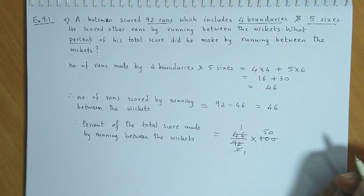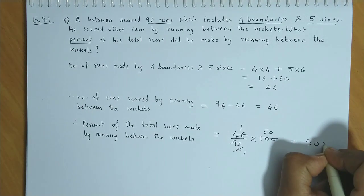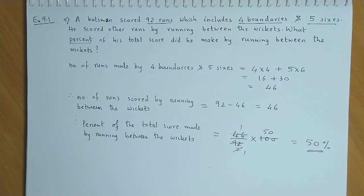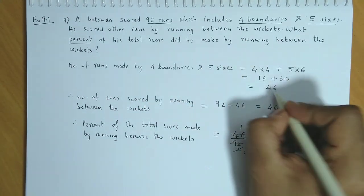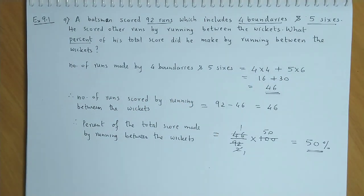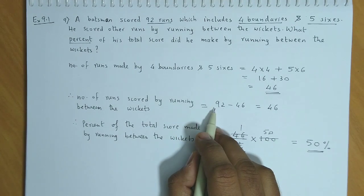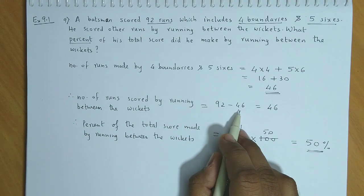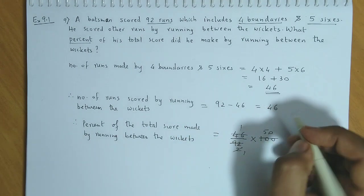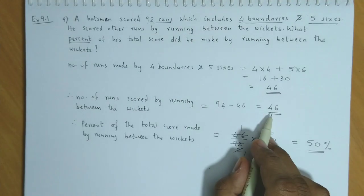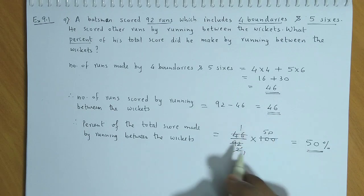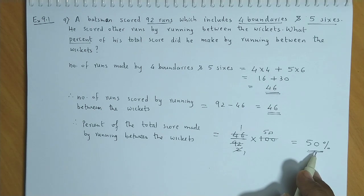So the required percentage is 50%. To summarize: 4 boundaries and 5 sixes scored 46 runs; total is 92; runs by running between wickets is 46. So 46 out of 92 into 100 gives 50%.